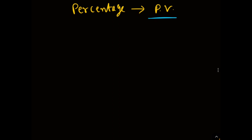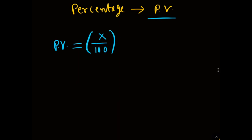If we have a transmitter and the output is available in the form of percentage — 0 to 100 percentage — then how to calculate the process variable? The formula is: PV equals x divided by 100, multiplied by span, plus LRV, lower range value. Here, x is the percentage signal.